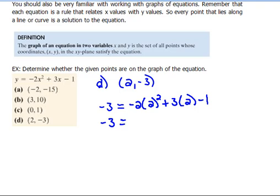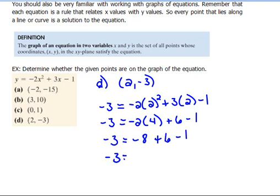So that would be negative 3 equals negative 2 times 4. And then 3 times 2 would be 6 minus 1. So negative 3 would equal negative 8 plus 6 minus 1. So negative 3 would equal negative 8 plus 6 would be negative 2. Minus 1 is negative 3. That is a true statement. So that point does lie on that curve.